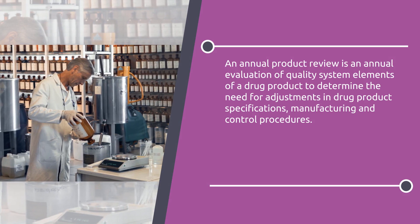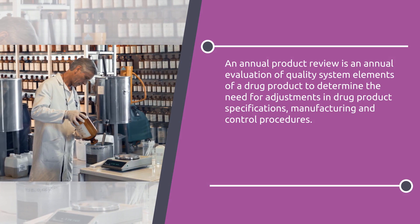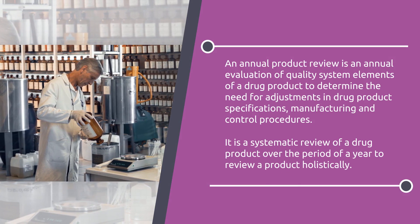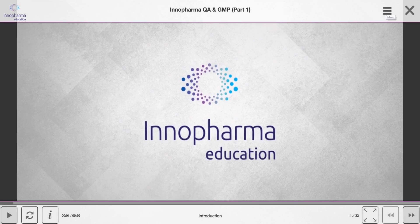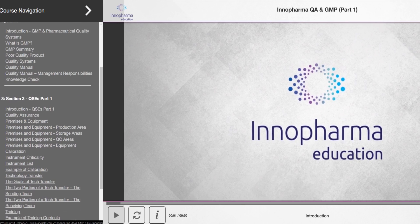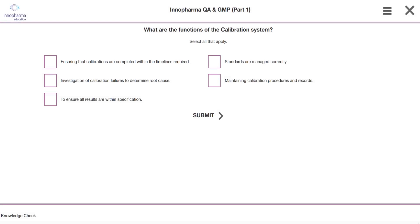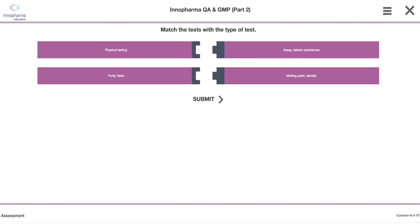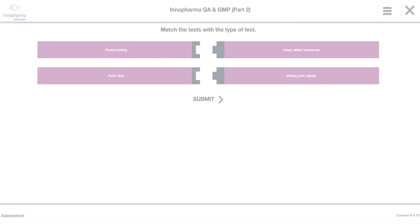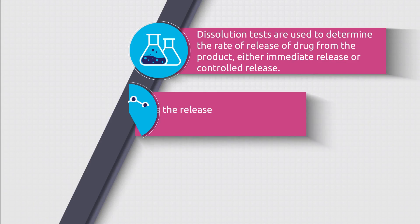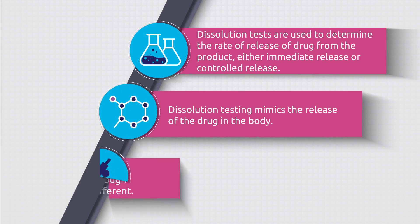The final QSE is annual product review, which is a systematic review of a product's performance over a calendar year. Content can be reviewed at the learner's own pace, with knowledge checks throughout the course to verify their understanding, and an assessment to test their knowledge at the very end. This course assumes no prior knowledge, and all topics are broken down piece by piece to make them accessible and enjoyable to learn.